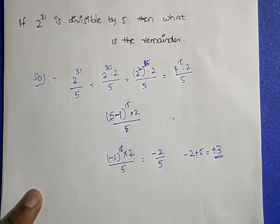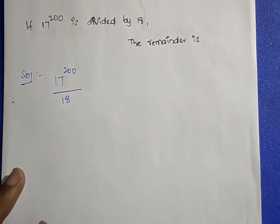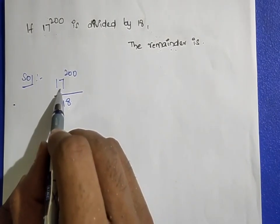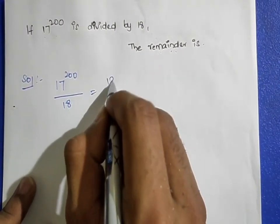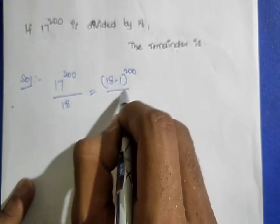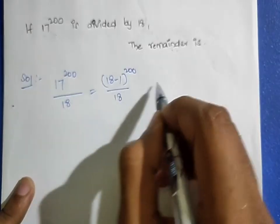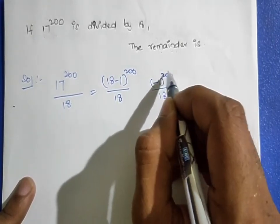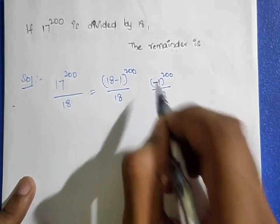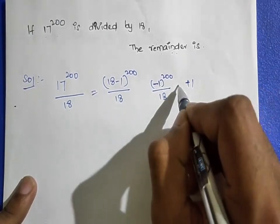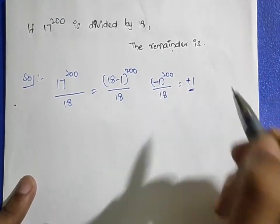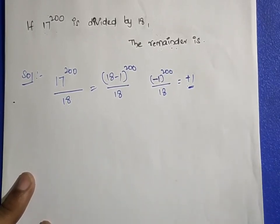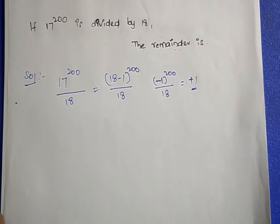Next: 17 power 200 is divisible by 18. We write 17 as (18 − 1), so (18 − 1)^200 / 18. This gives (−1)^200 / 18. Since 200 is even, (−1)^even = +1, so the remainder is 1.